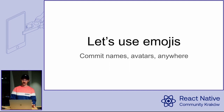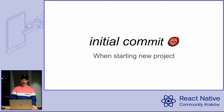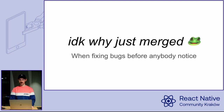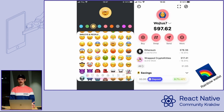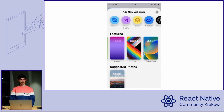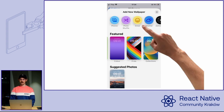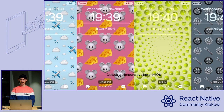Next step is, of course, use emojis — for commit names, avatars, anywhere. Emojis are everything. Like, for the initial commit on your new project, give it an ogre face. I don't know, I just merged when fixing some bugs — it always works and nobody is angry at you. For example, I worked for some time on the Rainbow Wallet project and they used emojis for avatars that you can simply manipulate. It was totally random, so everyone got something crazy. And in the latest release of iOS, you get this super new exciting icon for creating a new wallpaper, and you can put any emoji you want — up to six at a time.